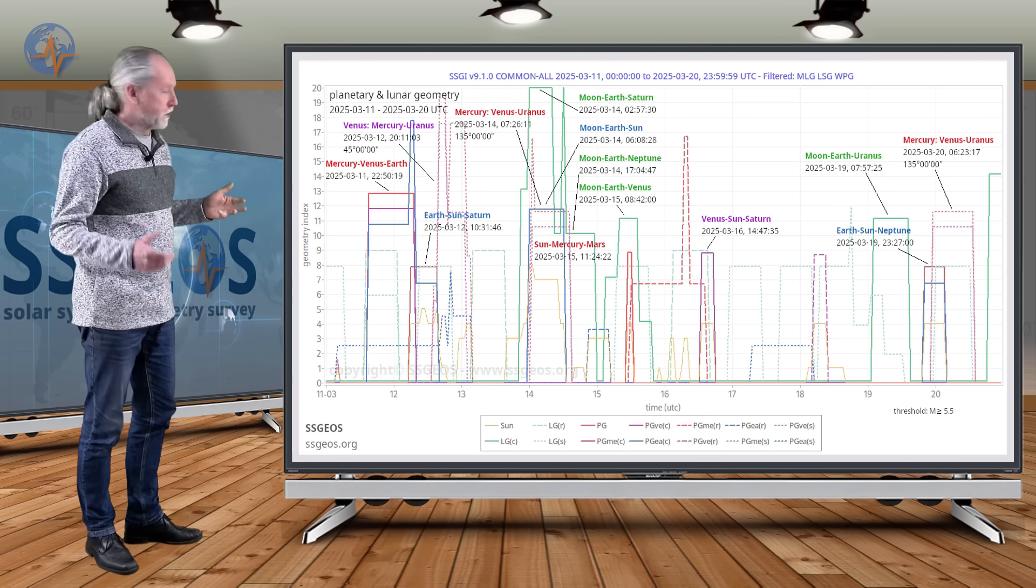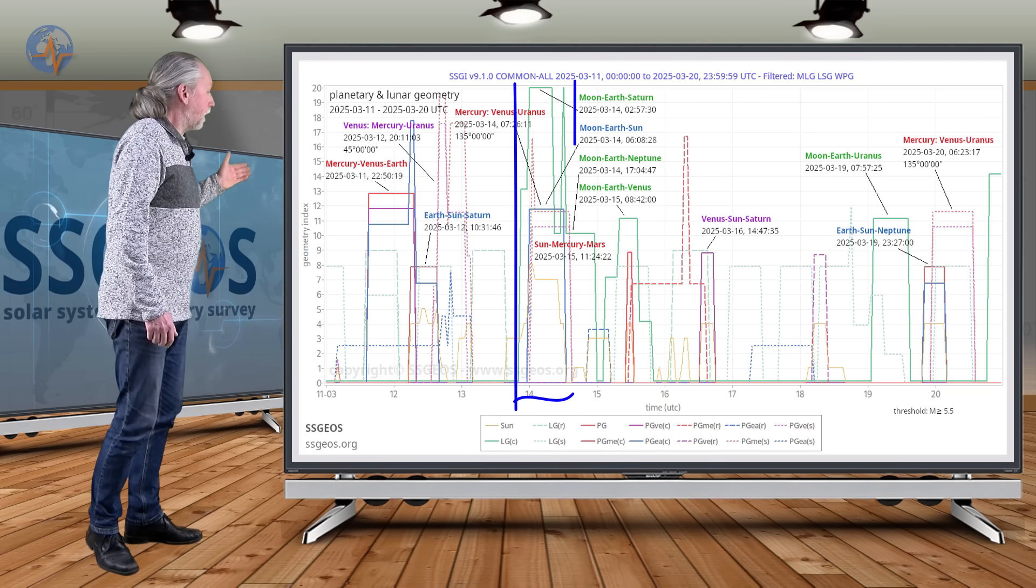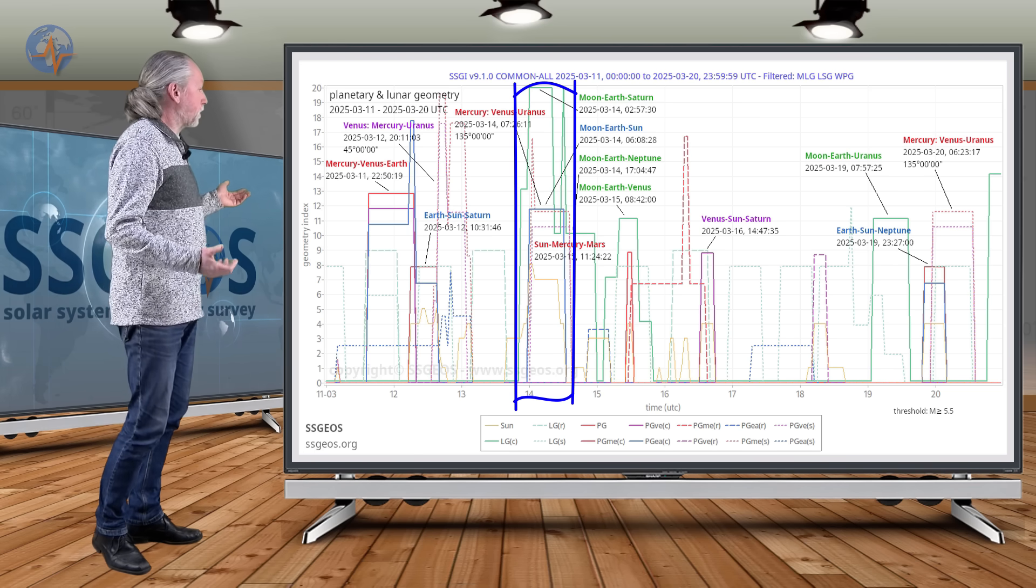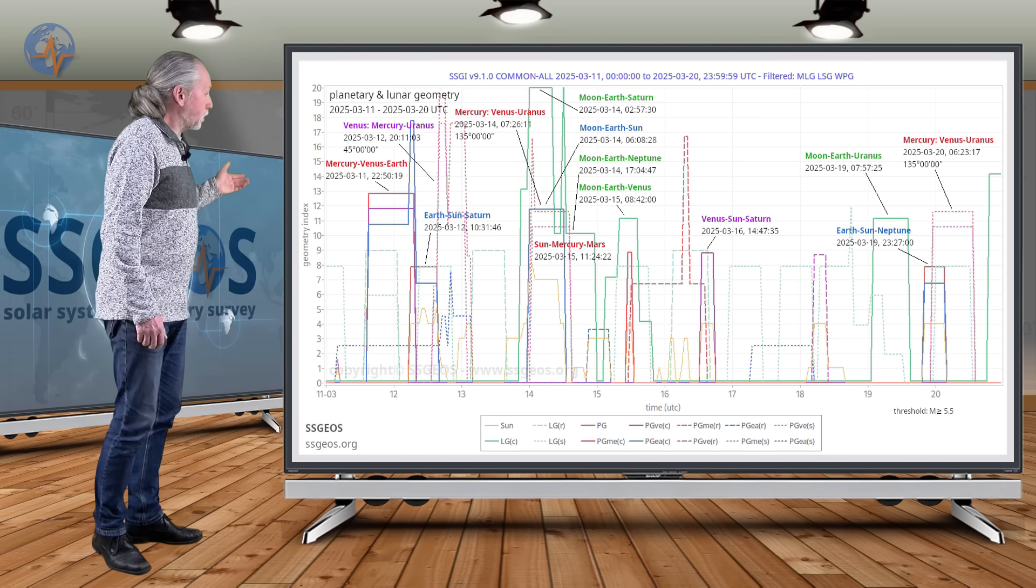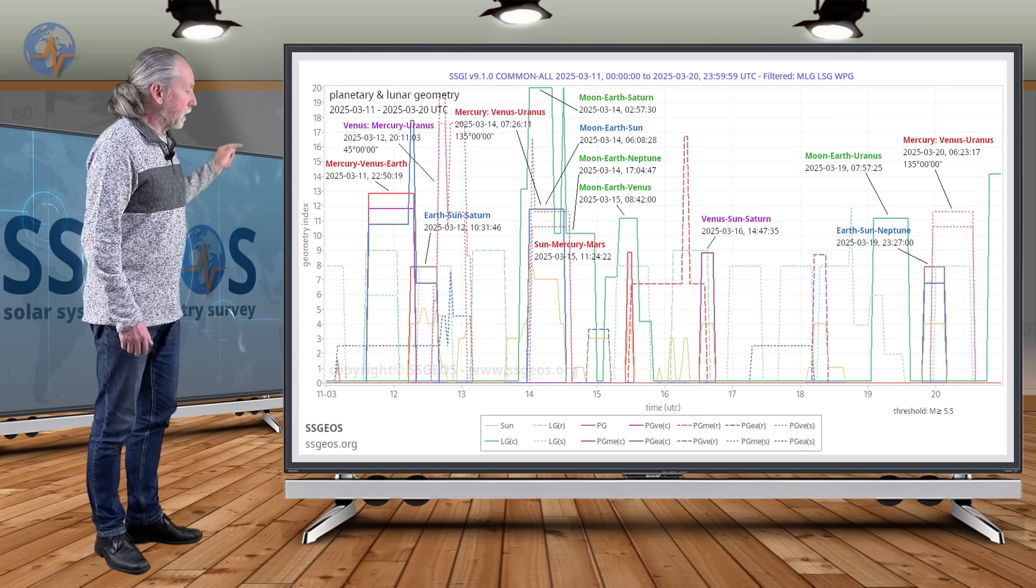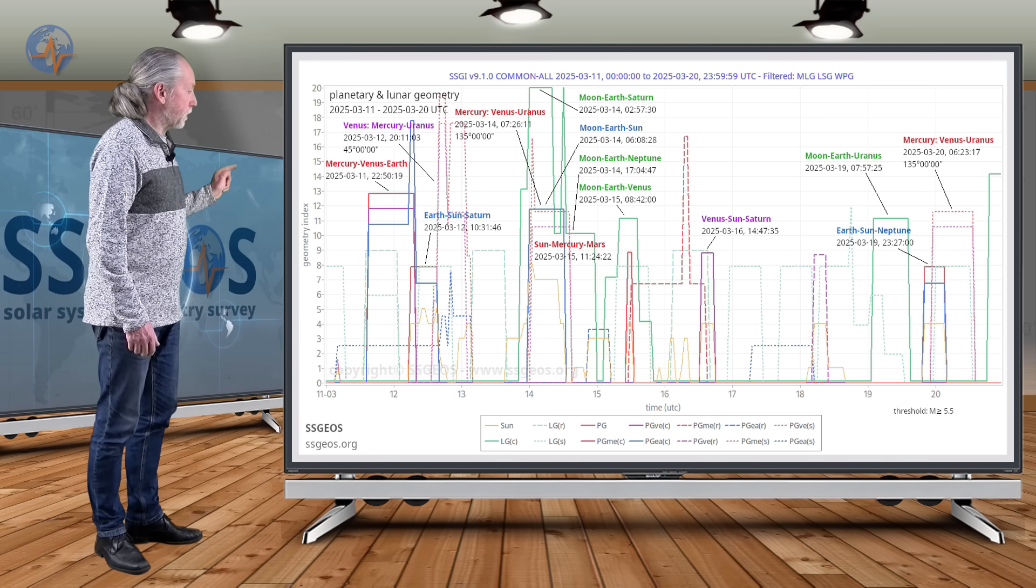If you look further into this timeframe, we see on the 14th lots of lunar geometry. That is the full moon, but it also converges with a conjunction, a lunar conjunction with Saturn and also with Neptune and with Venus shortly after. That all happens on the 14th.